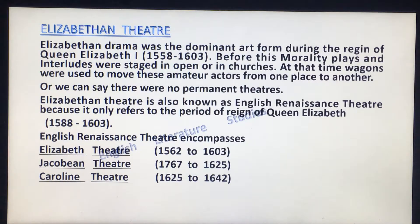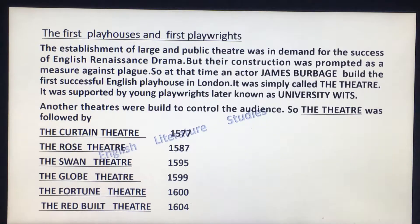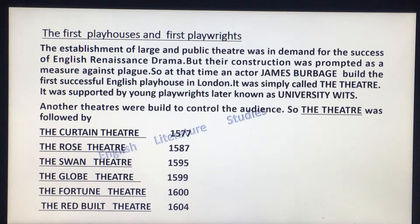The establishment of large public theatres was in demand for the success of English Renaissance drama, but construction was prompted as a measure against plague. At that time, an actor — James Burbage — built the first successful English playhouse in London, which was simply called 'The Theatre.' It was frequented by young playwrights later known as the University Wits.